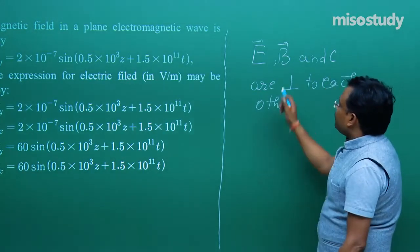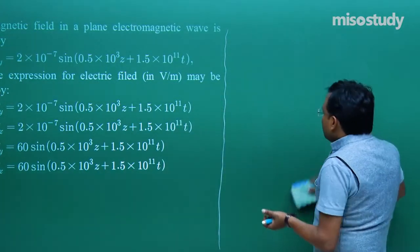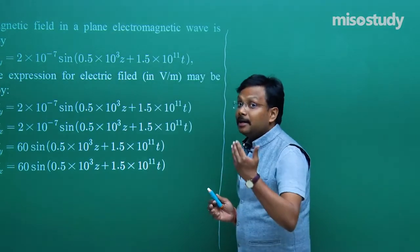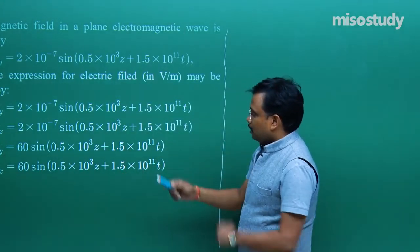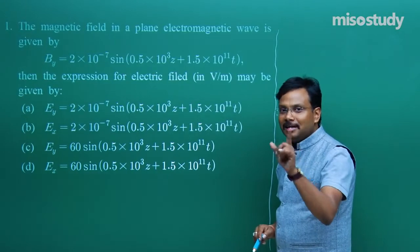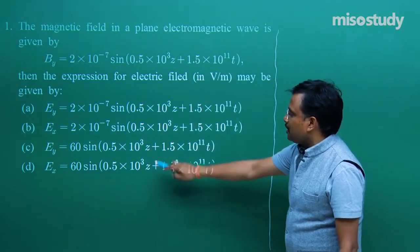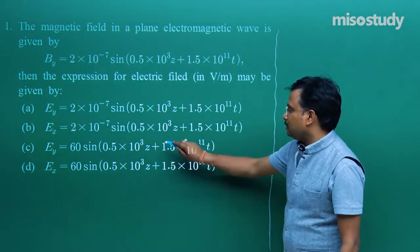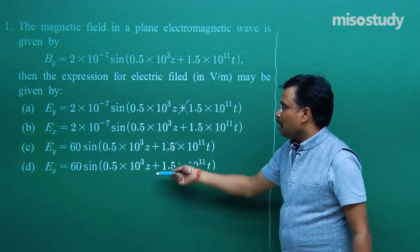If B is along the y-axis as given in the question, obviously E cannot be along the y-axis. E will have to be either in z or x axis. Looking at the inside terms, the wave number is along z-axis, so the only possibility for E is the x-axis. This means A and C cannot be options. The only possibilities are B and D, so let us find which one is correct.